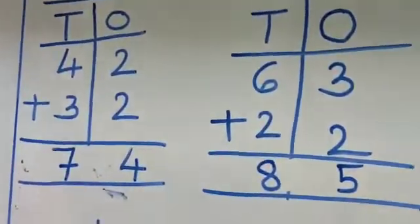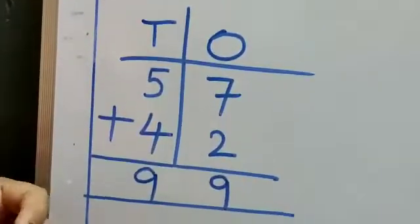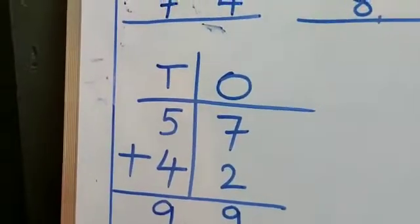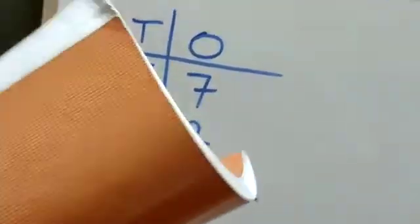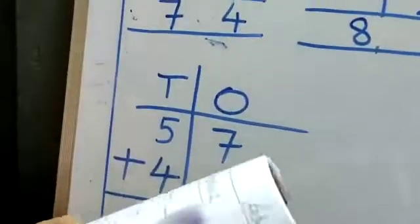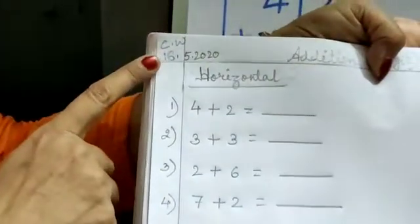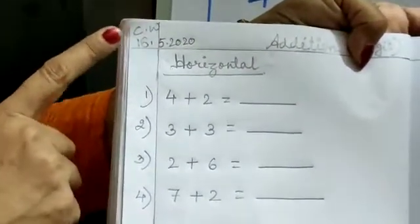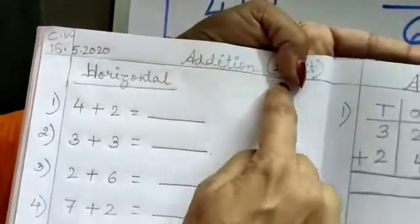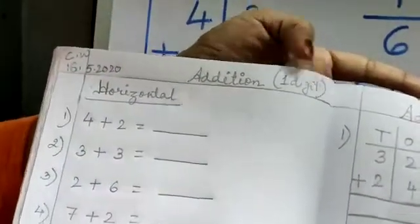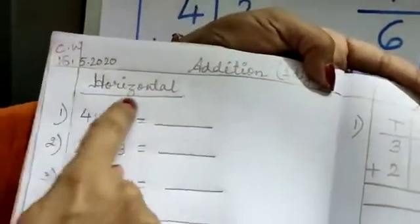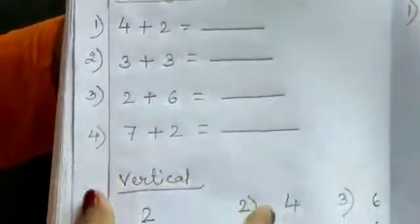Dear students, like this we will continue the addition two digit. Now, I will show you how to write in the copy. See, one I have written and shown you like this. You will write. Here you will write CW date that is classwork date. Here you will write the heading. Then you will write here subheading. Then the sums you will do.